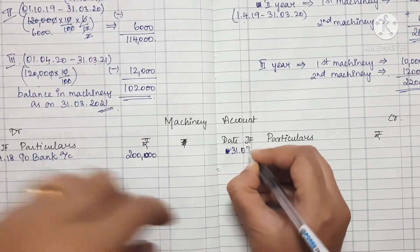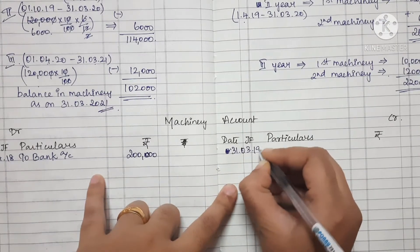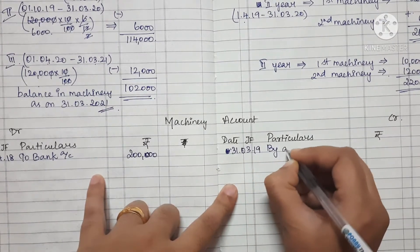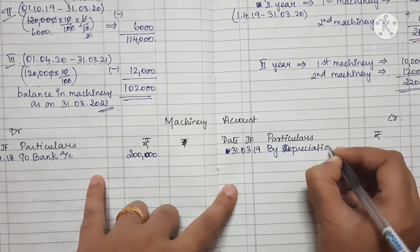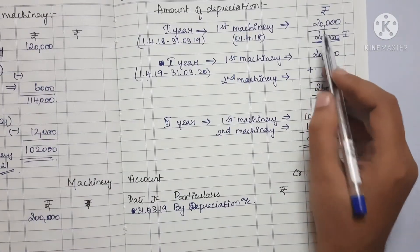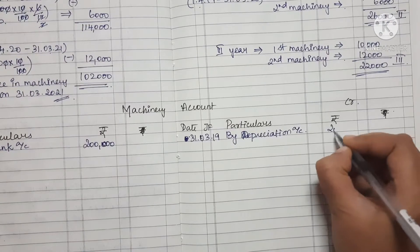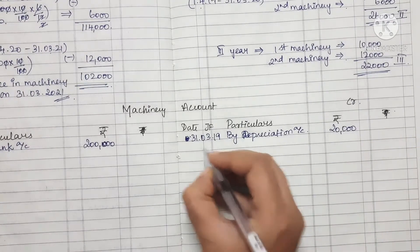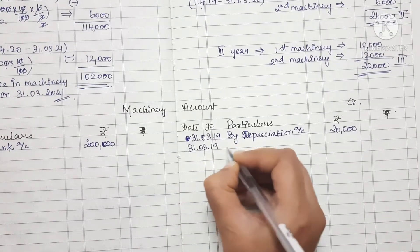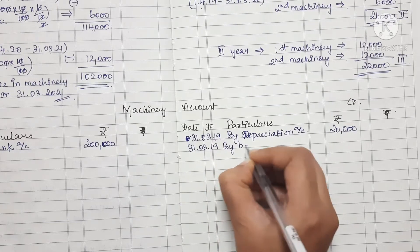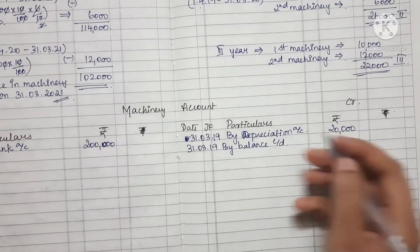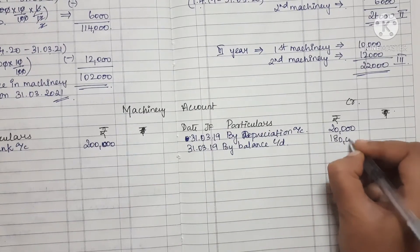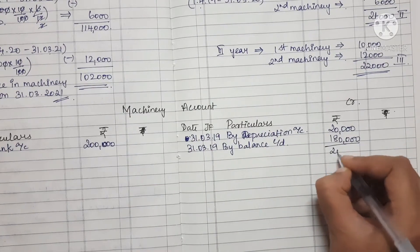Let's check the closing entry and the depreciation. Let's check the depreciation amount. By depreciation, the amount is $20,000. This is $20,000. The closing — by $20,000 — so we have $1,80,000.